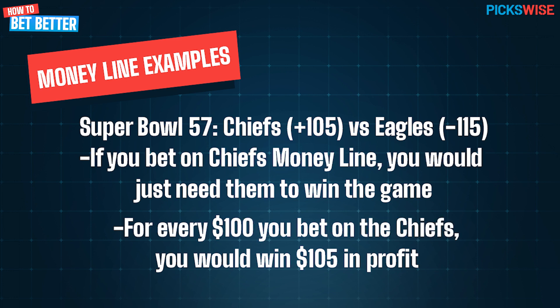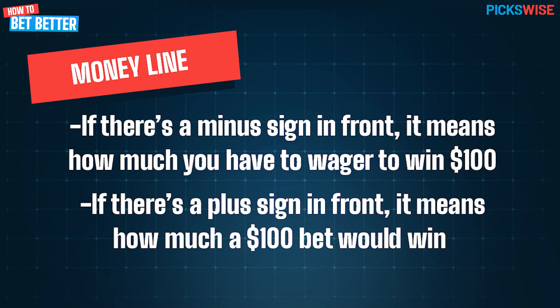Now, on the other side, if you correctly thought the Chiefs were going to win the game, betting them on the money line at odds of plus 105 meant that a $100 bet returned $105 in profits. So if there's a minus sign in front, it's how much you'd have to wager to win $100. But if there's a plus sign, it's how much a $100 bet would win.